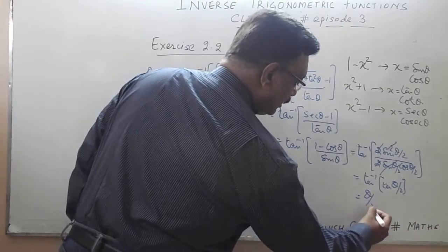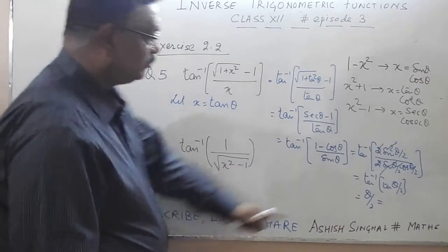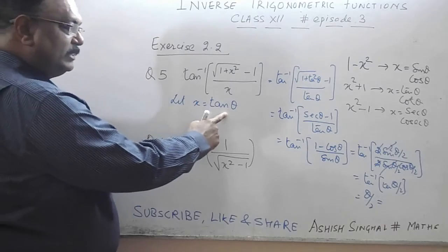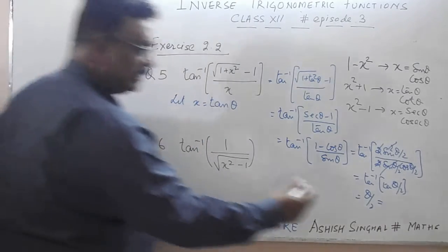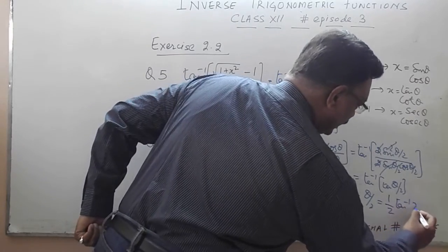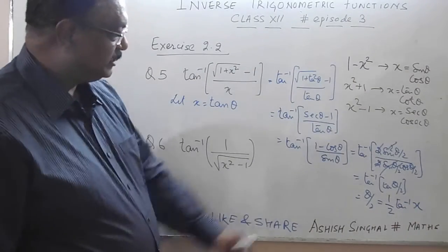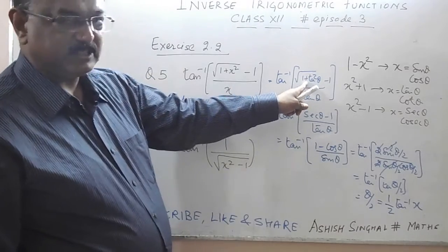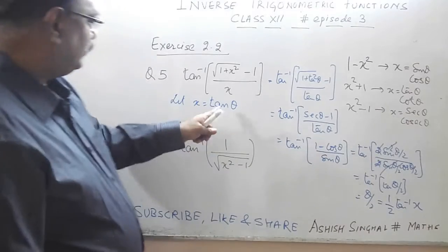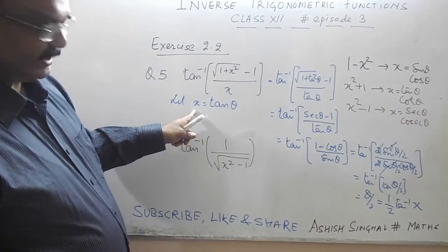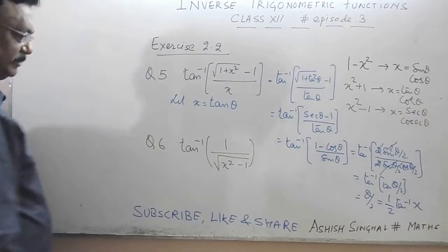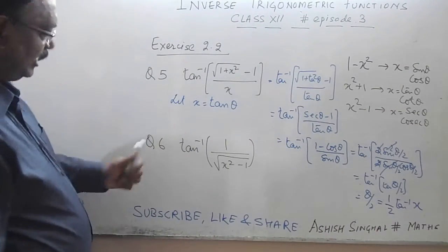This gives us θ/2. Since x = tan θ, we have θ = tan⁻¹x. So the simplified form is (1/2)tan⁻¹x. We substituted x as tan θ, simplified to get θ/2, and since θ = tan⁻¹x, the answer is (1/2)tan⁻¹x.